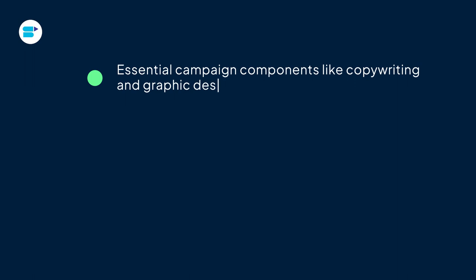A ROAS of three or more is like a gold star — it means you're getting three dollars or more in sales for every one dollar you put into ads. Aim for an even higher ROAS if you can. A high ROAS doesn't automatically mean your business is making lots of money. For example, if you get 10 ROAS but your sales are only 100 dollars, you also need to think about other costs.